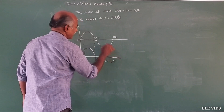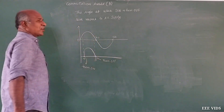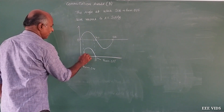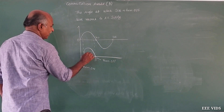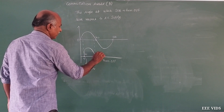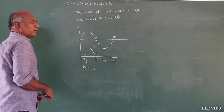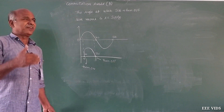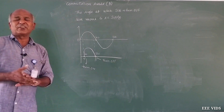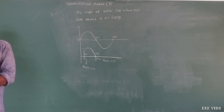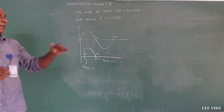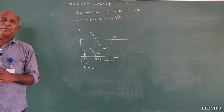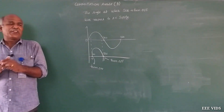With respect to the AC supply, suppose the SCR turns on at 30 degrees and turns off at 120 degrees — so beta is equal to 120 degrees. That is when the SCR goes to the off state with respect to the given AC supply. So commutation angle versus triggering angle — this is our basic concept.